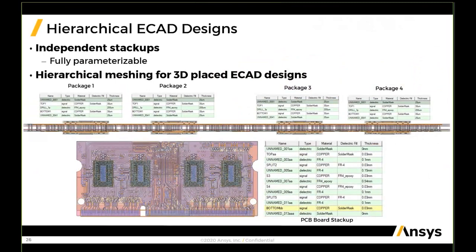This merging process is done in a straightforward and automated name-based per-pin component mapping, enabled via numerous built-in utilities inside of 3D layout. These eight two-layer DRAM packages will be merged on the top and bottom of the PCB. Ease of use, scalability, and automation are key customer requirements for HFSS 3D layout workflow. We have introduced automated ways of merging packages on PCBs by introducing hierarchical fully independent stackups that are parameterizable.